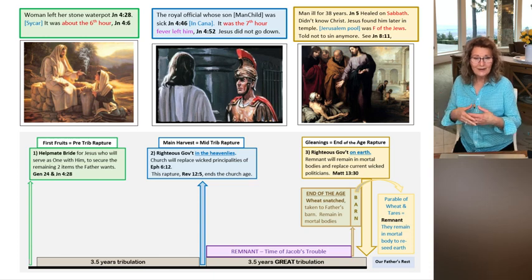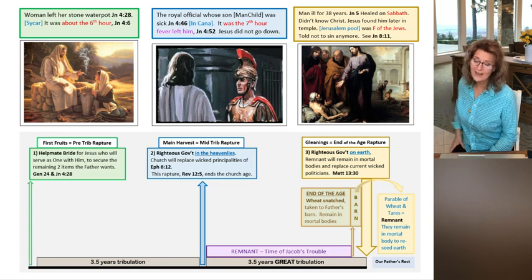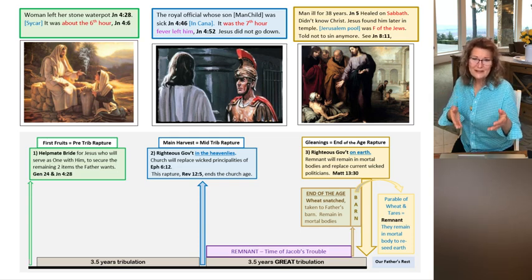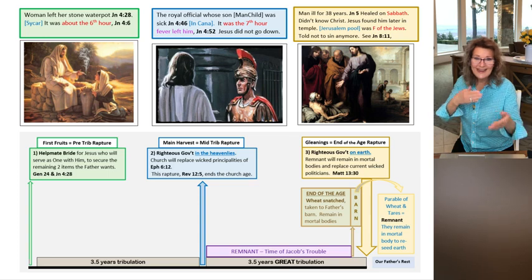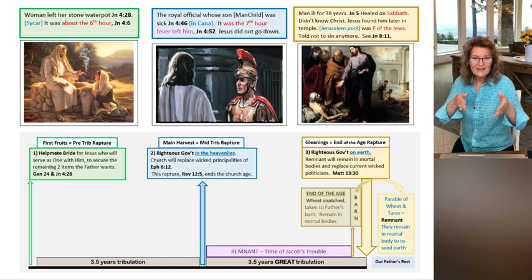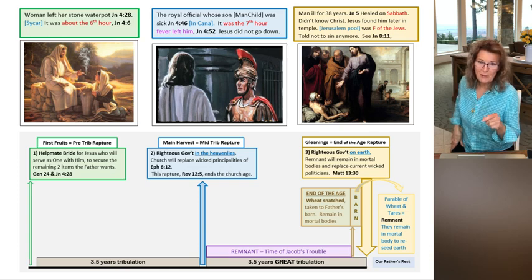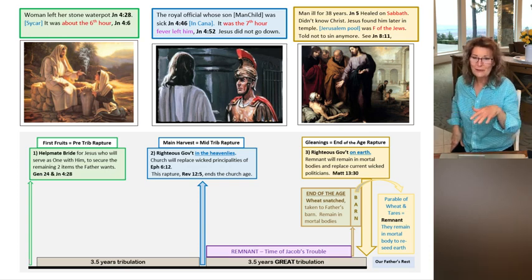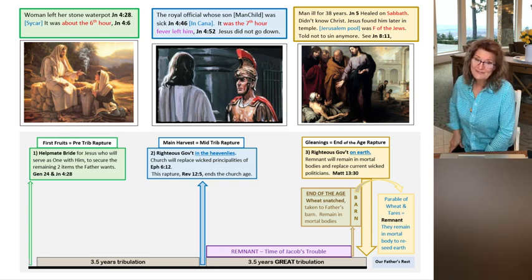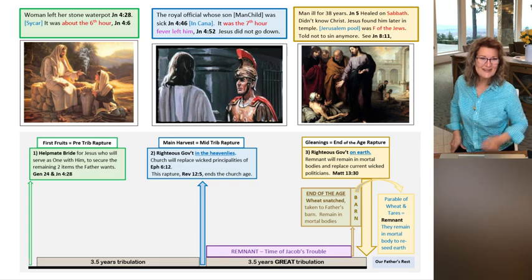They did admit the land is beautiful, full of produce, they brought some back, but the 10 said, oh my goodness, there are giants there, we look like grasshoppers in their sight. And indeed they did, that was true because God's intent was to send the children of Israel into the promised land and replace the giants that were there in Canaan. Just like the remnant is going to replace the wicked rulers and powers that are governing on earth right now.